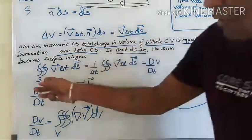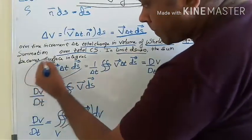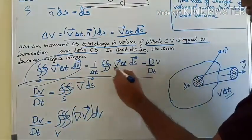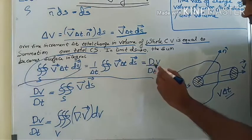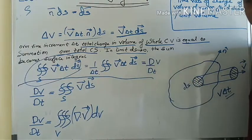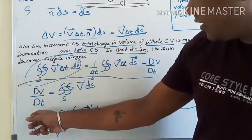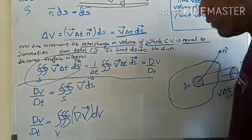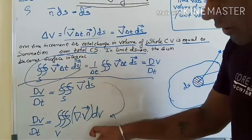If we divide this term by delta t, then delta t will cancel out and this term is nothing but dV by dt — the time rate of change of volume. So dV/dt equals the surface integral of V dot ds. This is the surface integral, and this needs to be converted to a volume integral.